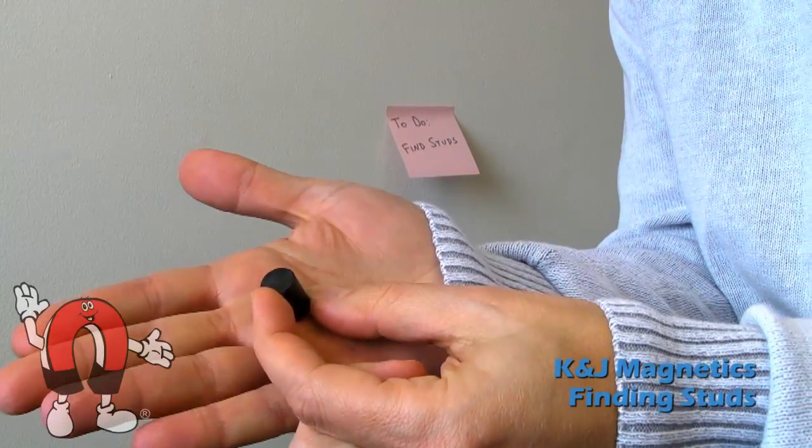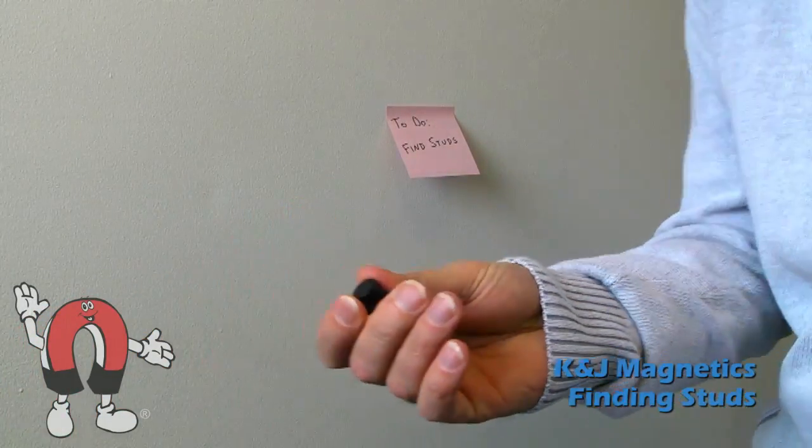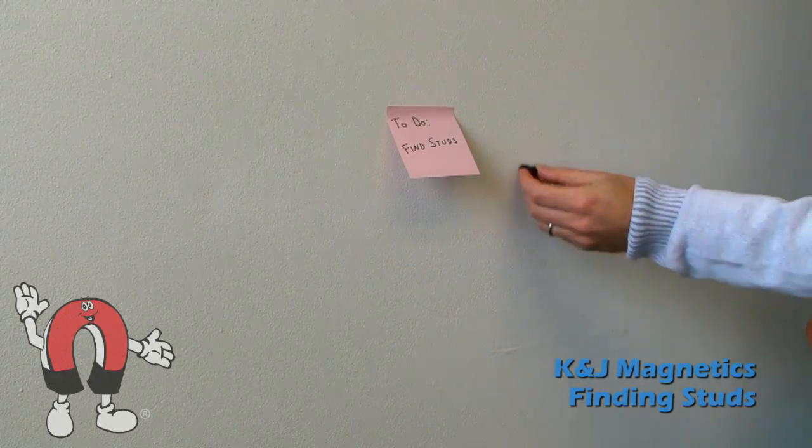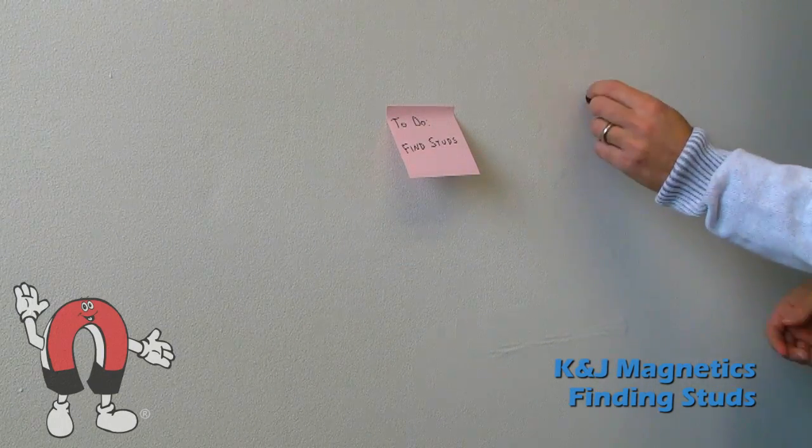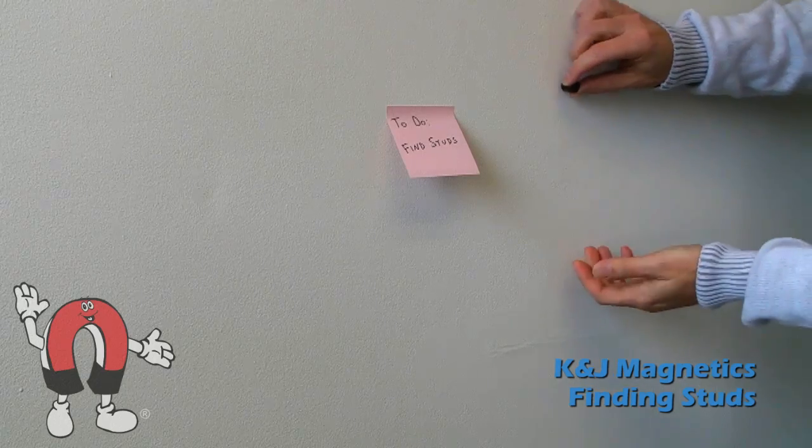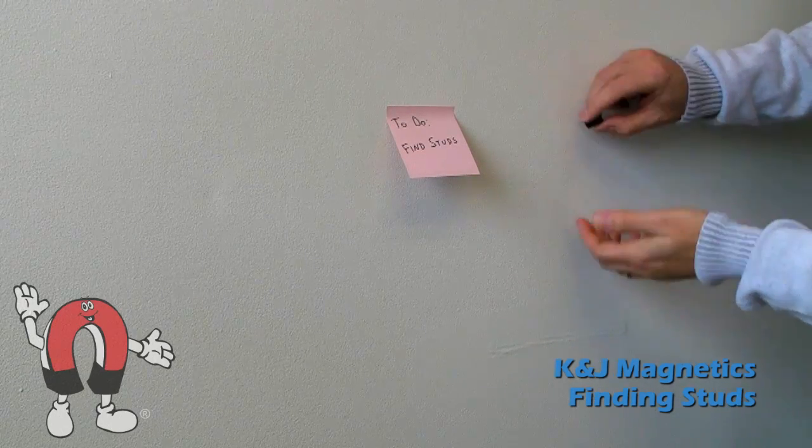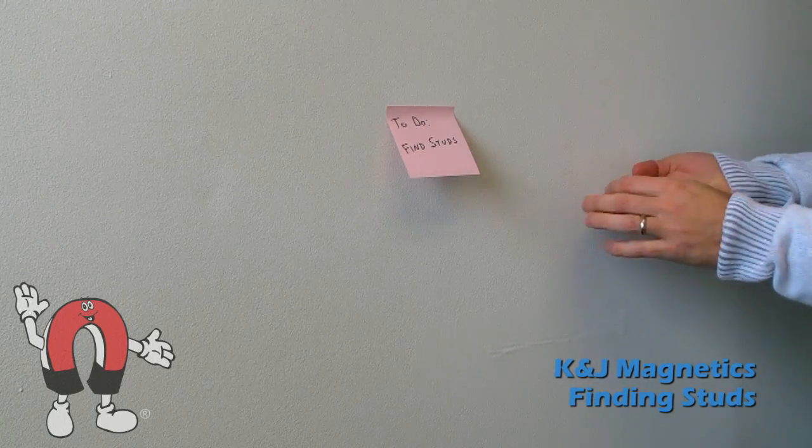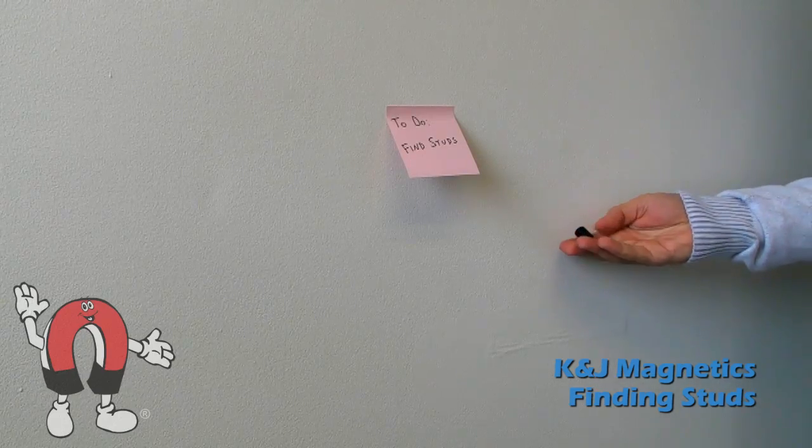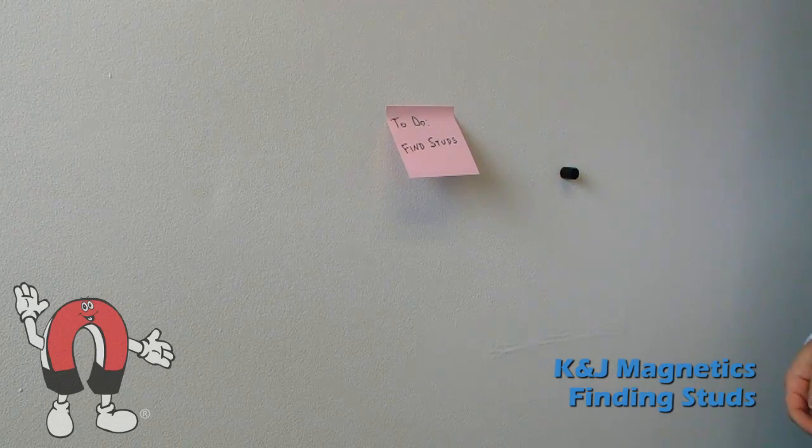Another option that's a little stronger, I think a little easier to find them with, is this half inch diameter plastic coated cylinder magnet. It also works to find the steel screws that are holding the drywall in place. It just reaches to it from a little farther away, making it easier to find.